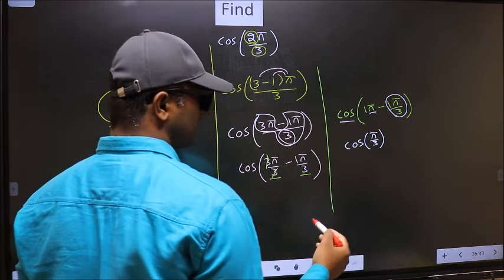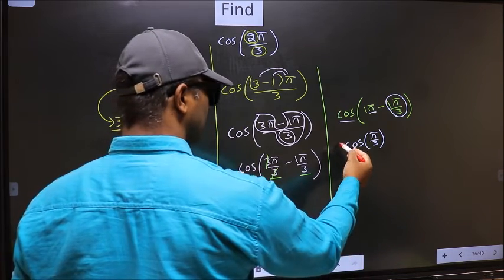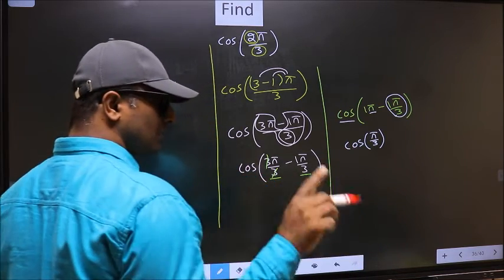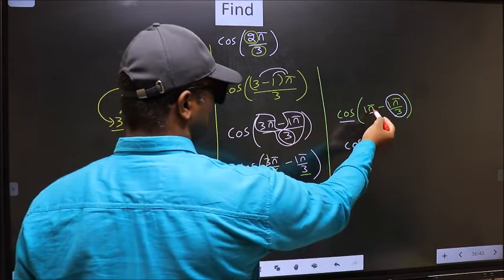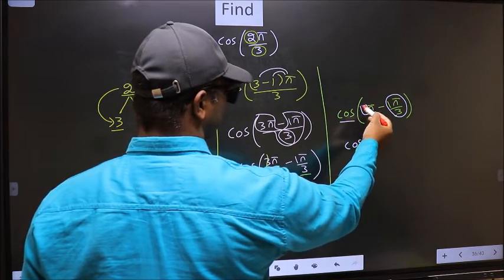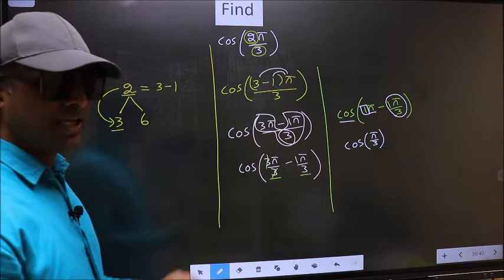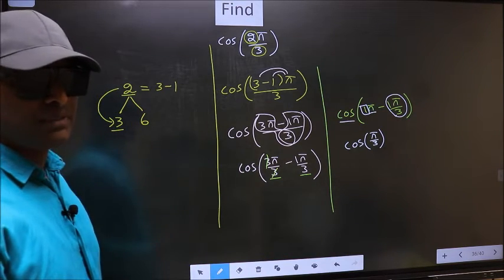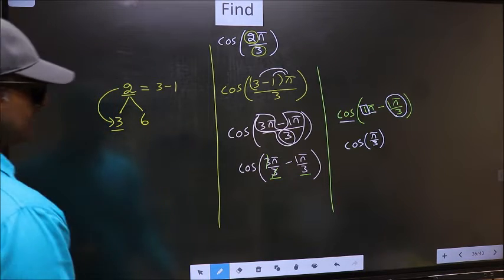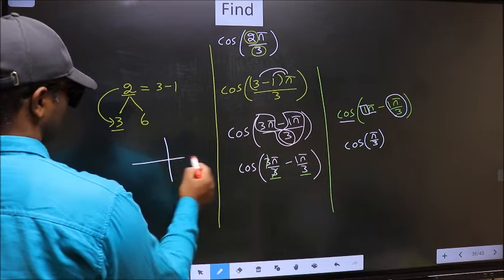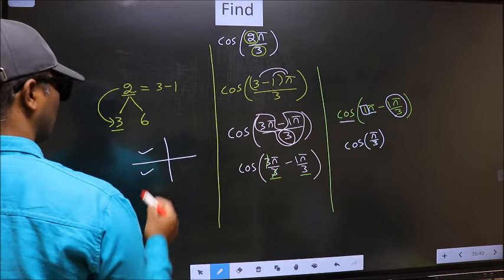Now the question arises, will we get here plus or minus? To answer that we should look at the number before π, which is 1. And 1 is odd. And all the odd multiples of π, they lie in second or in third quadrant.